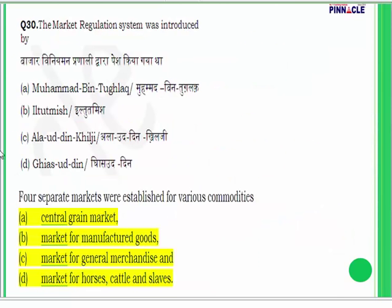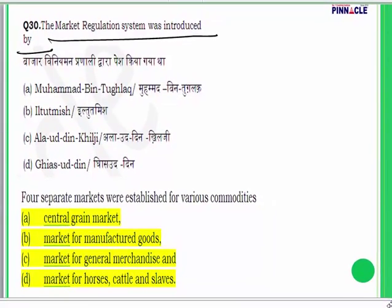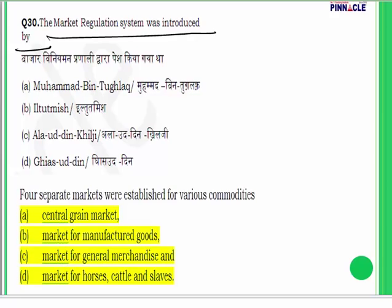Question 30: Who introduced the market regulation system? The market regulation system was introduced by Alauddin Khilji — a very important ruler in Indian history known for introducing many reforms. His market reforms are especially well known. He wanted to establish a huge empire and needed a large army. He also wanted to pay his soldiers in cash at the bare minimum salary so that they could survive.